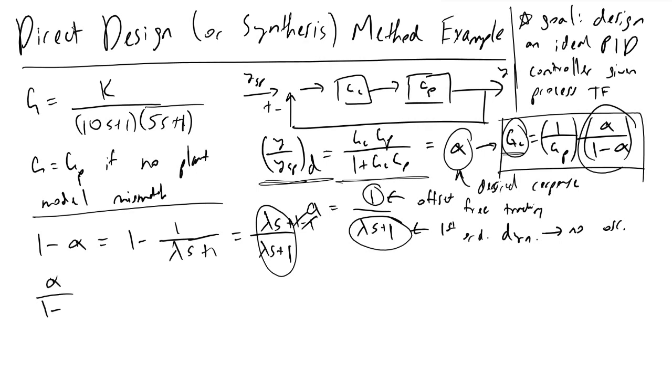So alpha over 1 minus alpha is equal to the inverse of this, which would be lambda s plus 1 over lambda s, and then times alpha, which was 1 over lambda s plus 1. So these terms cancel out, we're left with 1 over lambda s for this term that we circled.